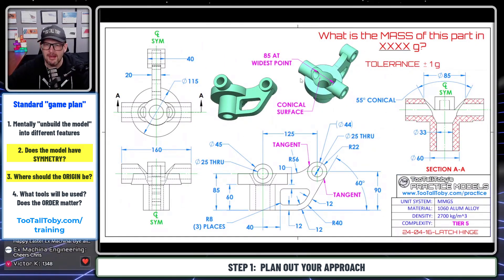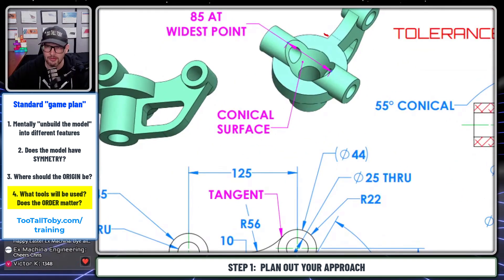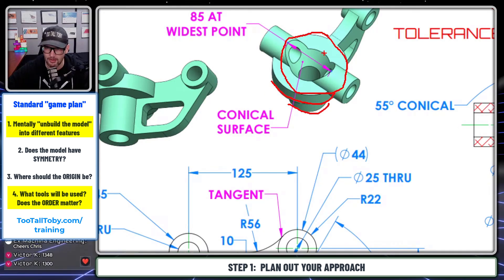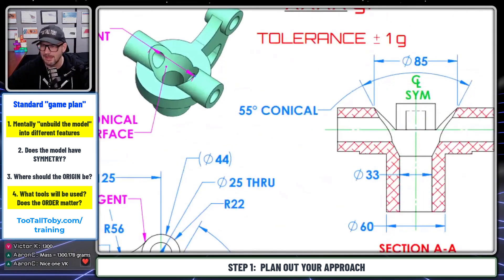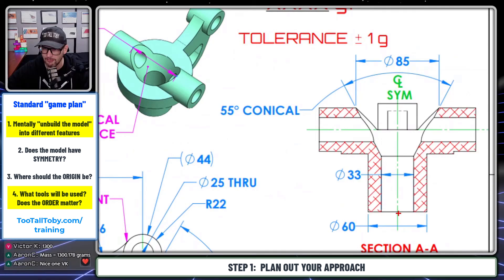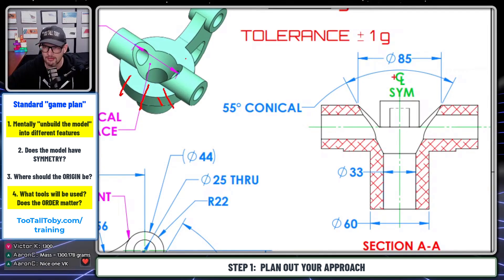The next area to break down: there's a lower ledge and a lower shape here that could be done as extrusions or revolves. This shape being conical — you see the note 'conical surface' — definitely needs to be done as a revolve. The note '85 at widest point' further indicates this geometry should be sketched as a revolve. So whether you do these shapes as extrusions or revolves, the important thing is that this cone shape is almost certainly going to be a revolve cut.